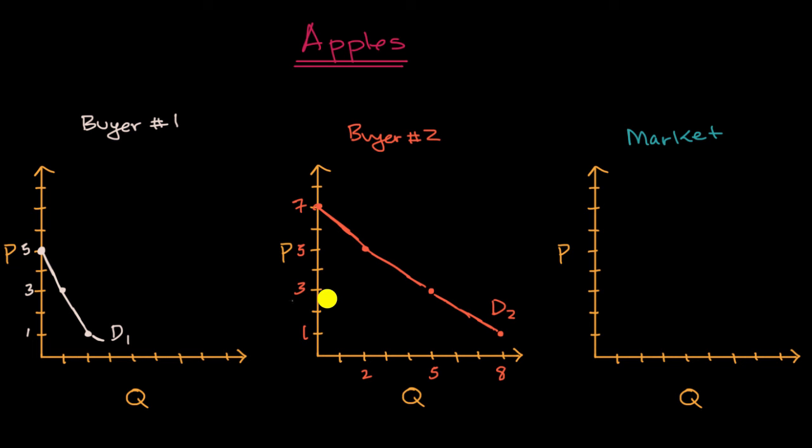So based on this data here, buyer one and buyer two are the only individuals in this market, once again, a huge oversimplification. What would the market demand curve look like? Pause this video and try to think that through.